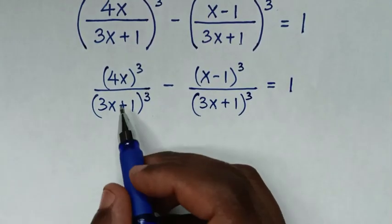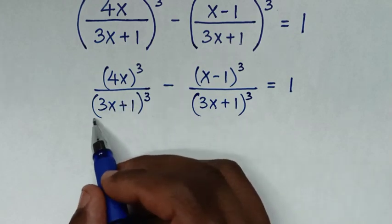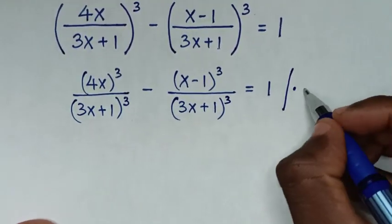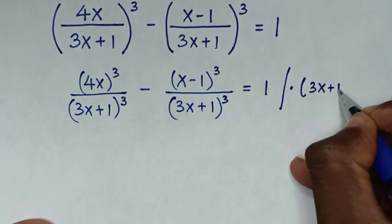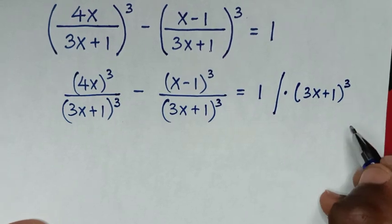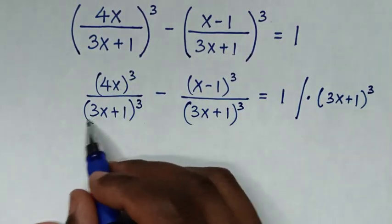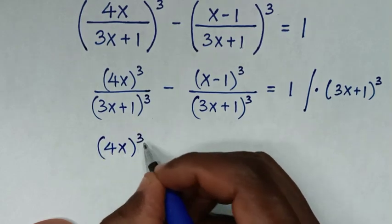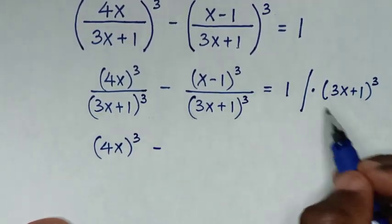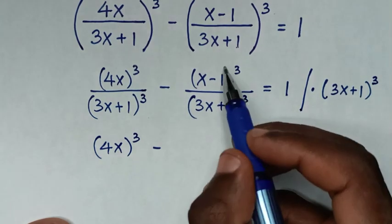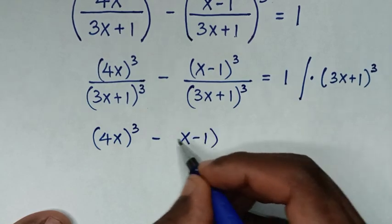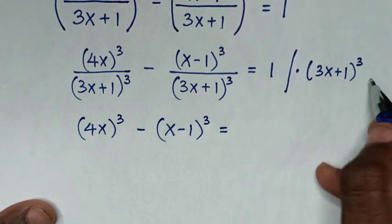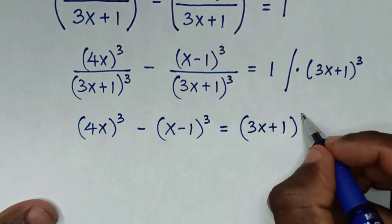In the next step, the denominators are the same, which is (3x+1)³. So we'll multiply the whole equation by (3x+1)³. This cancels with each denominator, leaving us with (4x)³ minus (x-1)³ equals 1 times (3x+1)³.